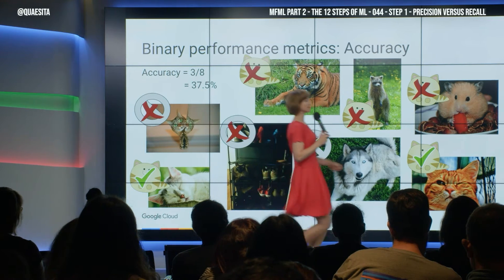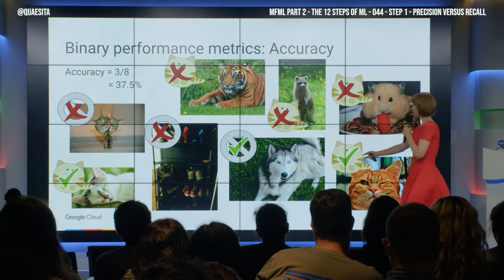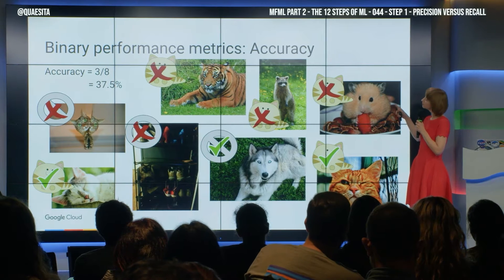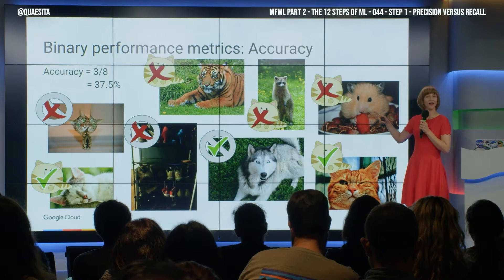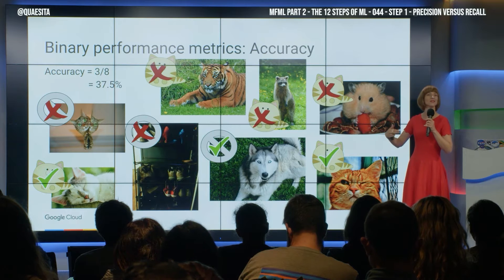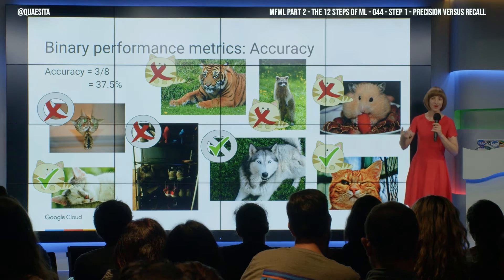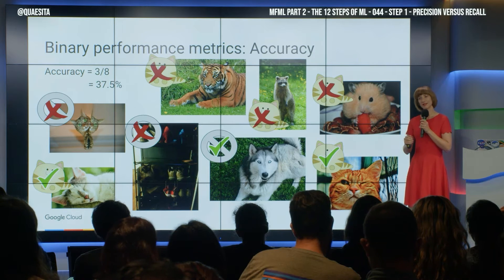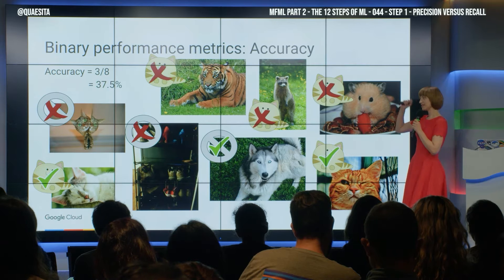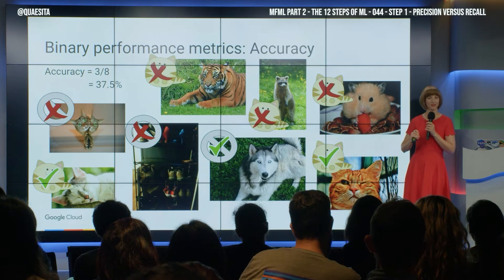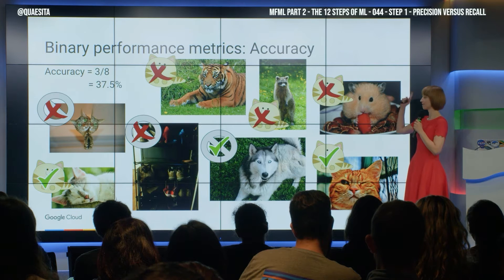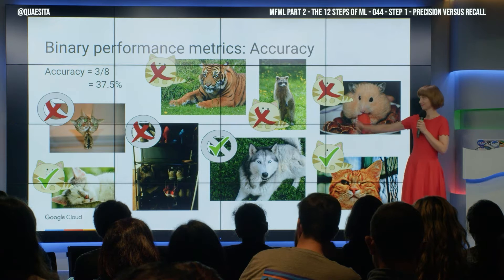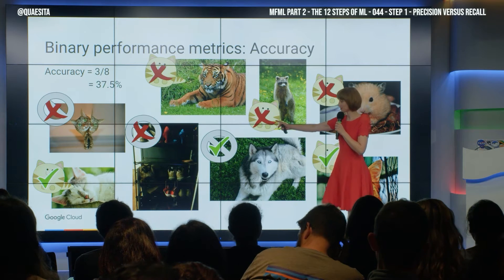Let's practice saying these labels out loud. This one is true positive — how about that one? Let me show you how to speed yourselves up. Don't try to say it in one hop — true positive, false positive, whatever. Instead, ask: did it think we got a cat? Did it get it right or not? That's false. Did it think it found a cat? That's positive. False positive.